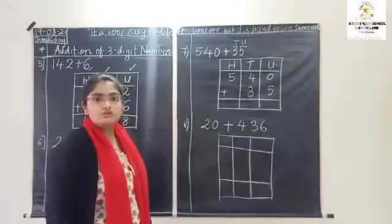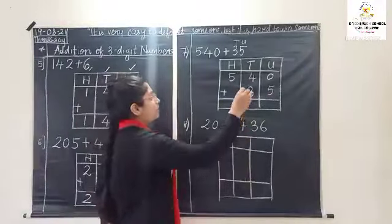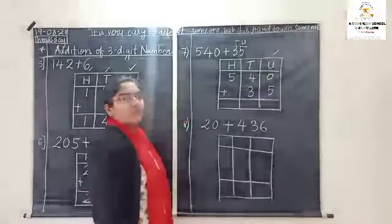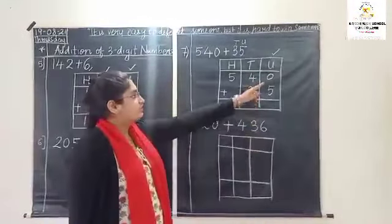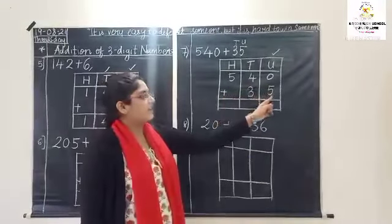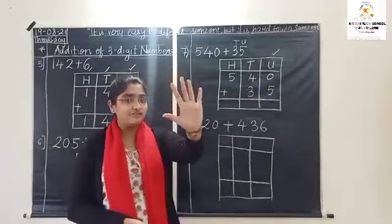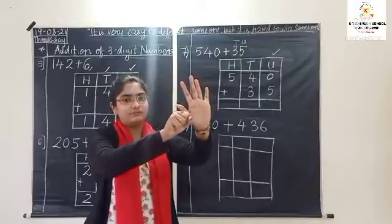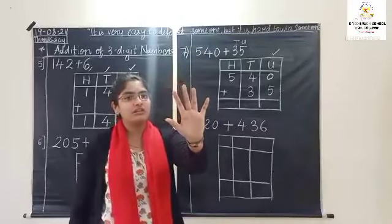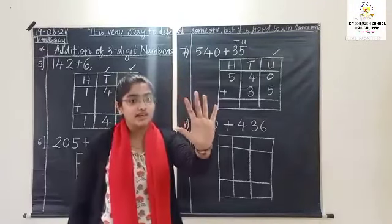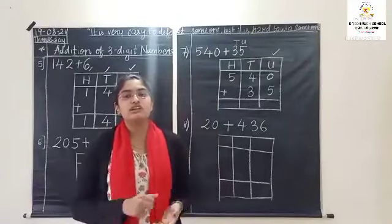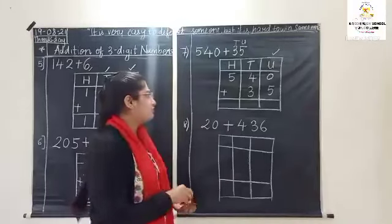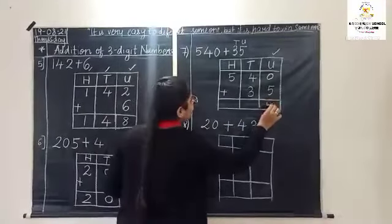Now do the addition. Always start with units place: zero plus five. We add zero to it — how many fingers? Five, because zero does not have value. So the answer is five.